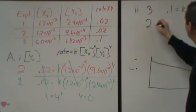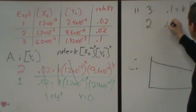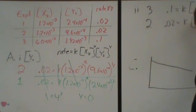And then same thing for experiment 2. I'm going to plug in 0.02 equals k times this 1.2 times 10 to the minus 3rd, raised to x.